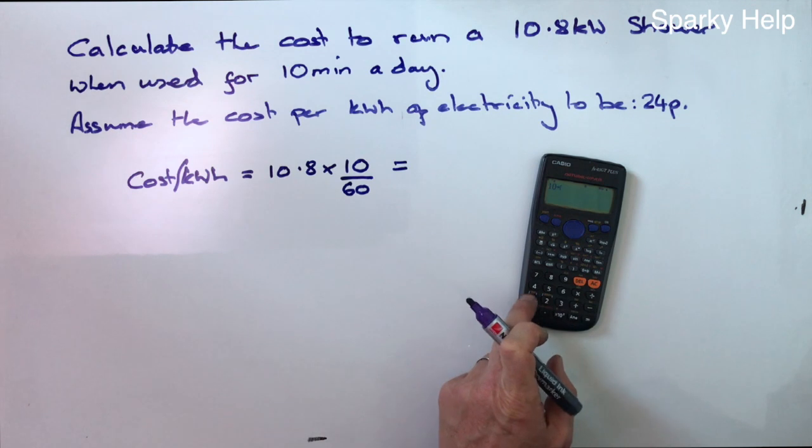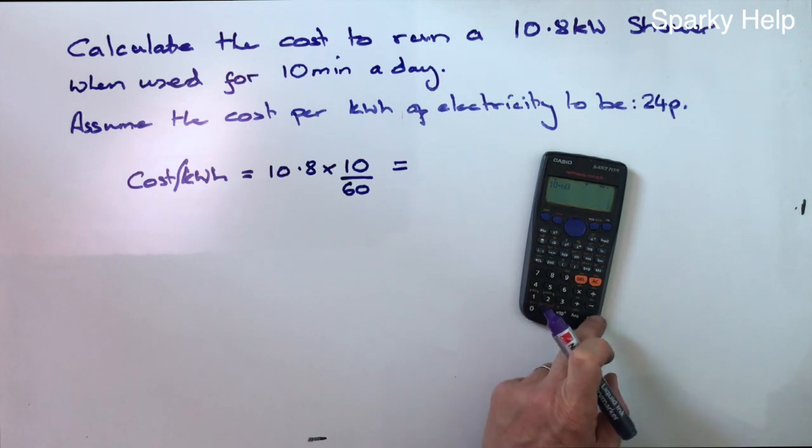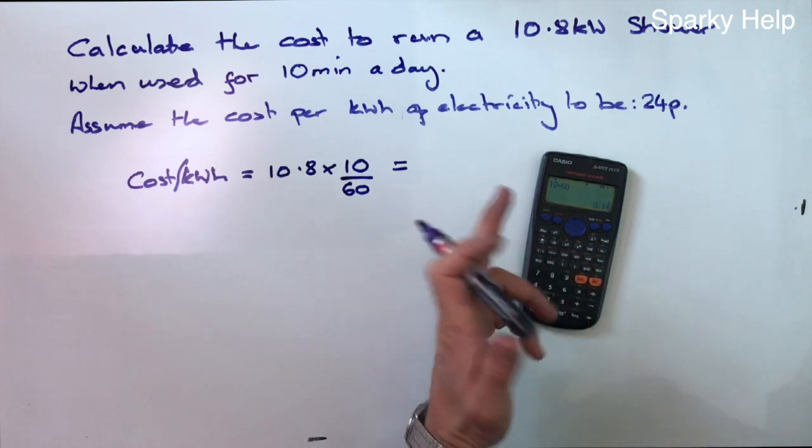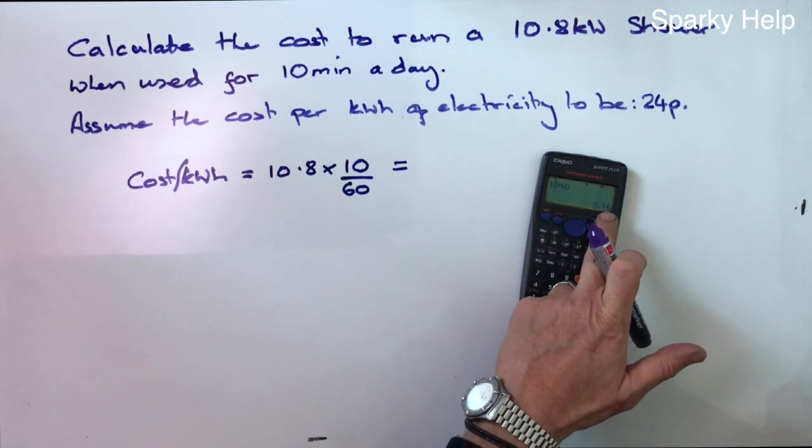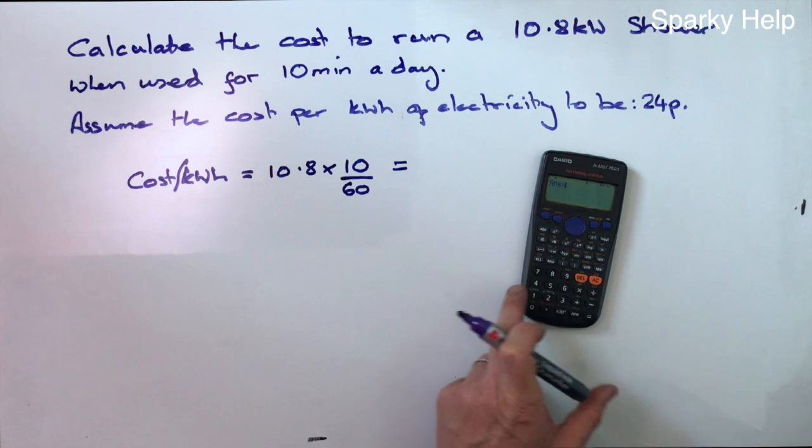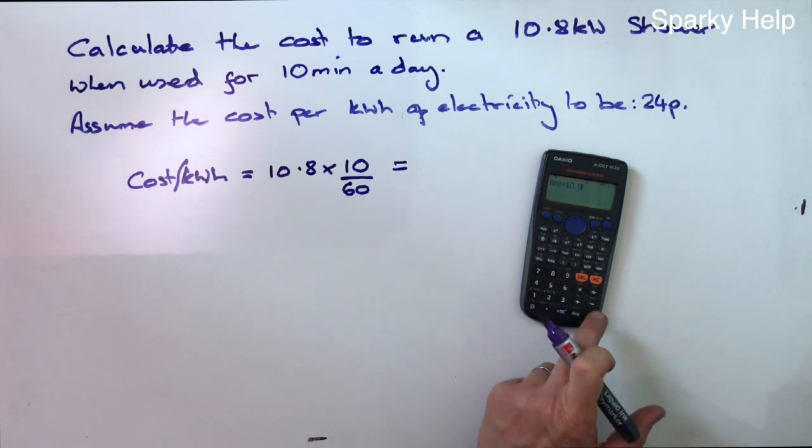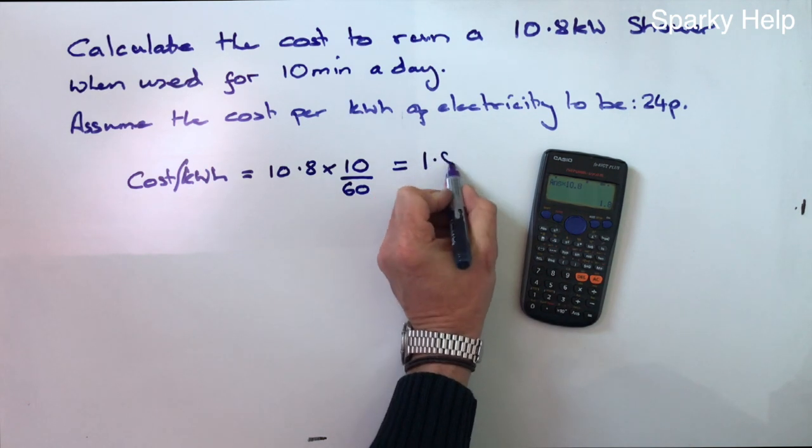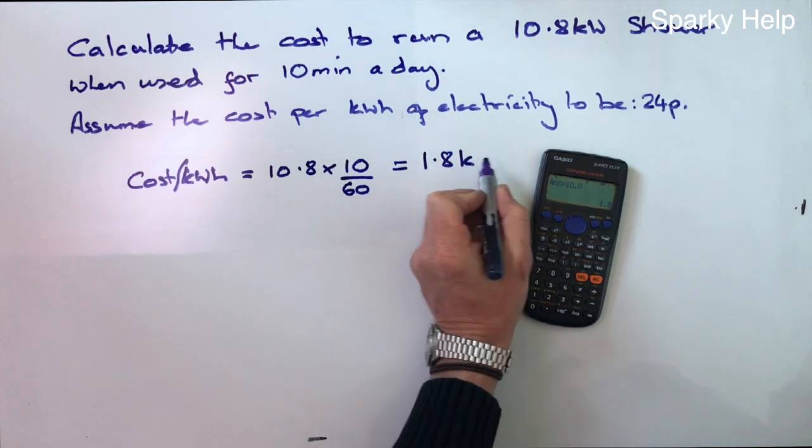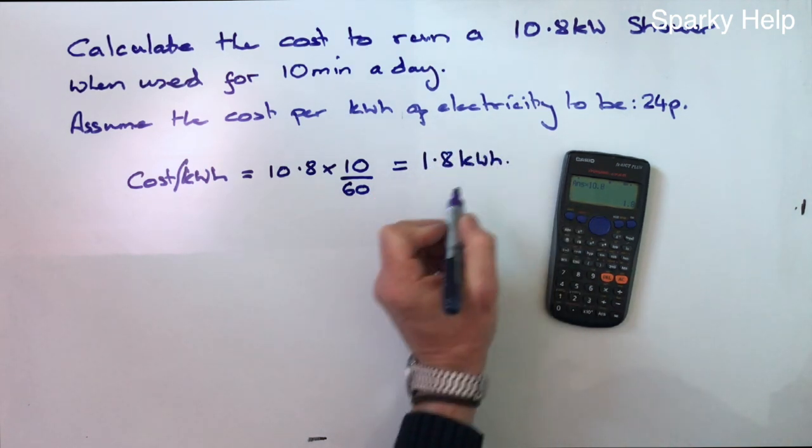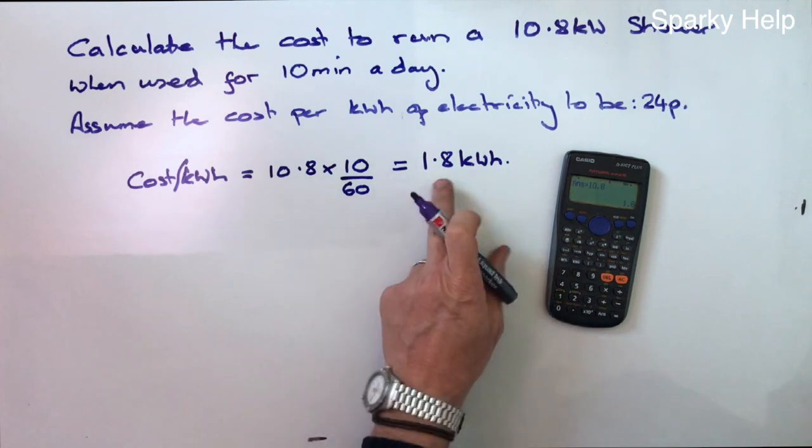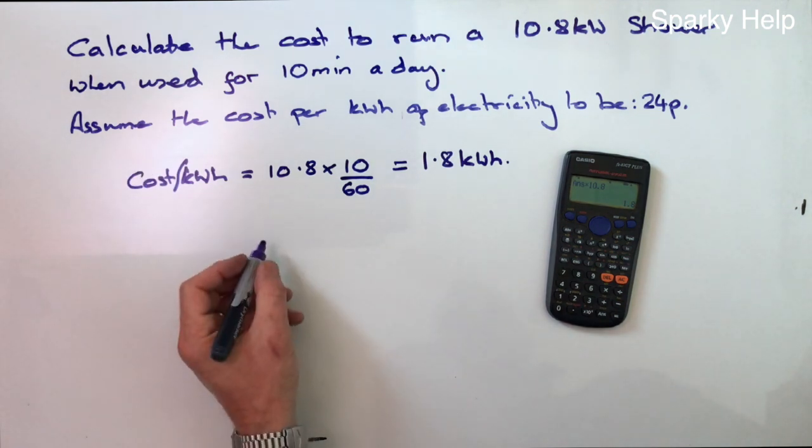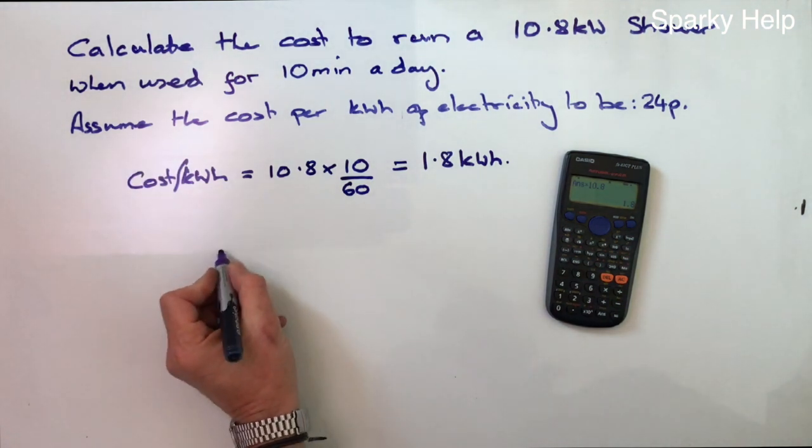So 10 divided by 60. So that's one sixth of an hour. It's 0.16 times 10.8. That's 1.8 kilowatt hours. We still want the cost. So that's how much your meter will go up by. 1.8 units. So to work out the cost.